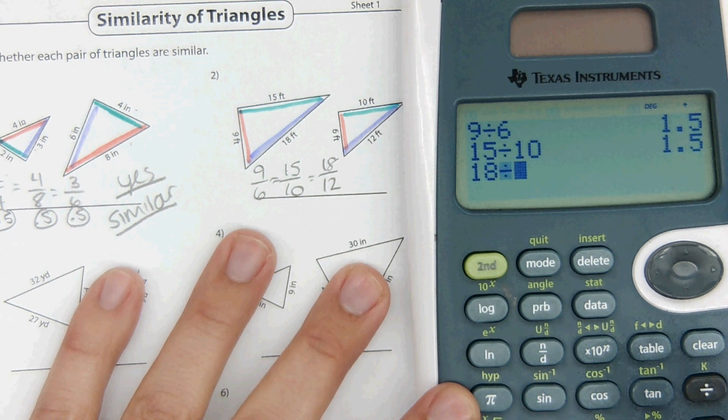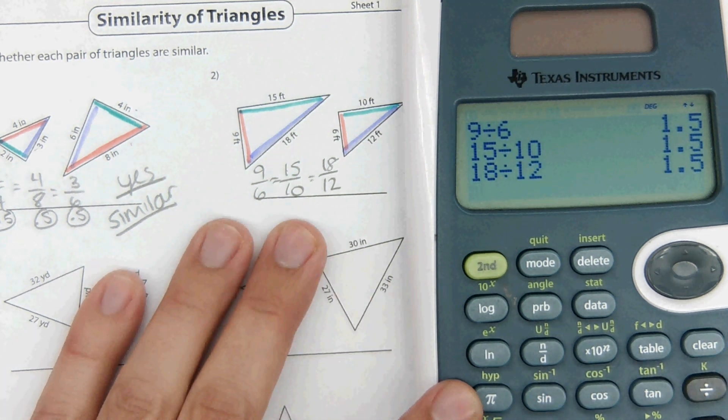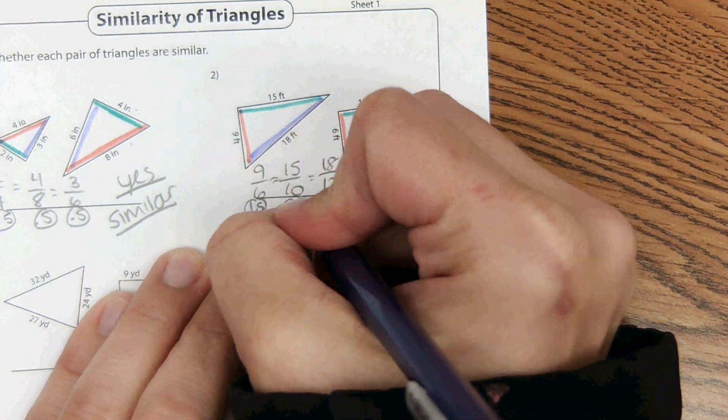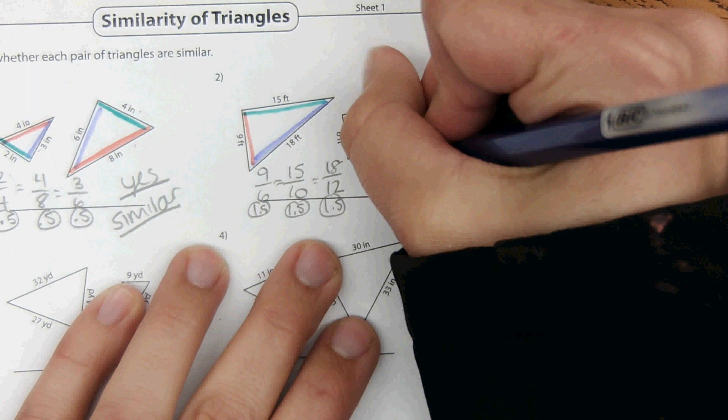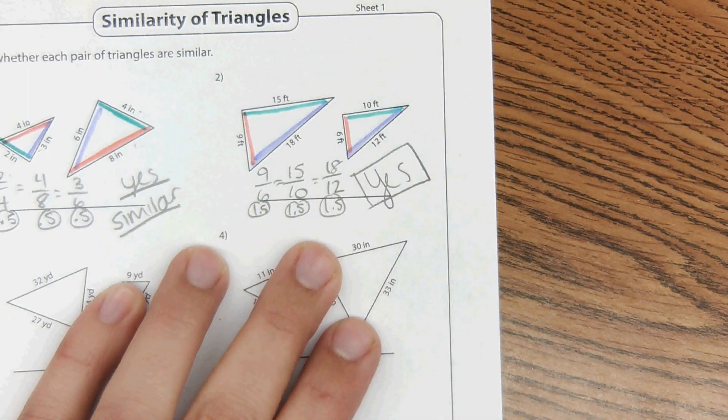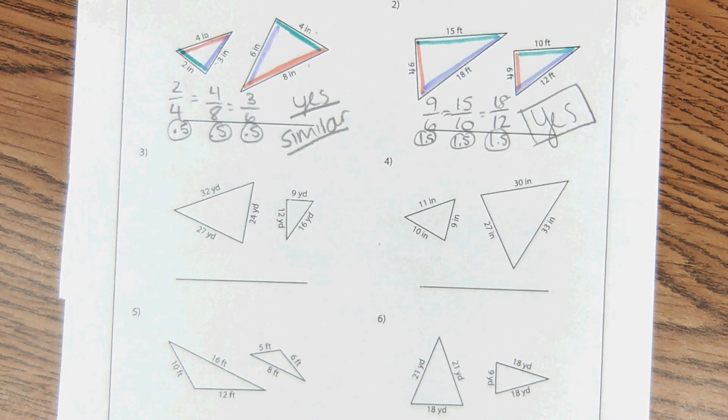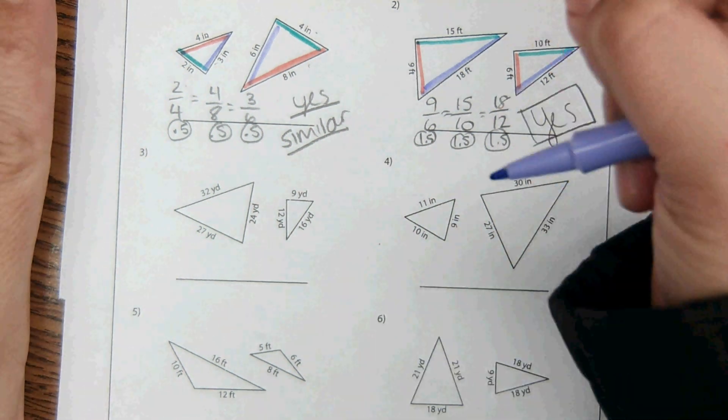Okay, and then once you have your ratios set up, you divide them to see if it comes out to the same number. And then we get 1.5, 1.5, and 1.5. So, yes, they are similar.